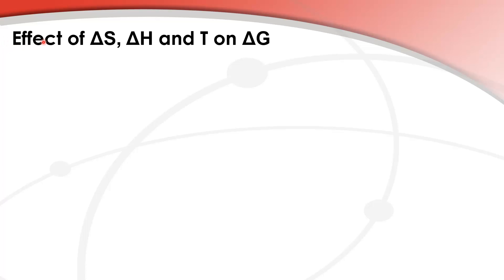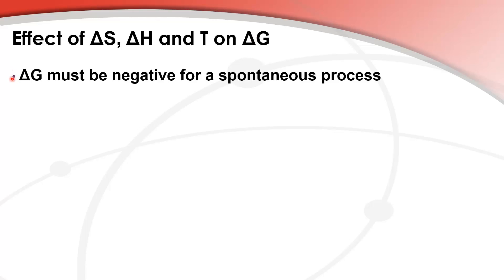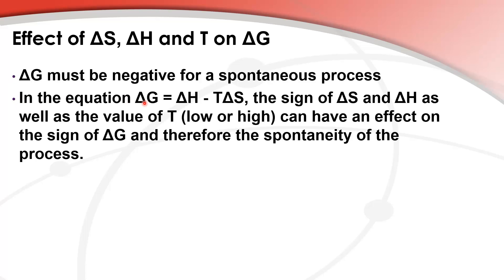In this video we look at the effect of ΔS, which is change in entropy, ΔH, which is change in enthalpy, and temperature on ΔG, the change in Gibbs free energy, and also the spontaneity of a process. The change in Gibbs free energy must be negative for a spontaneous process. The equation is: ΔG equals the change in enthalpy minus the product of temperature times the change in entropy.